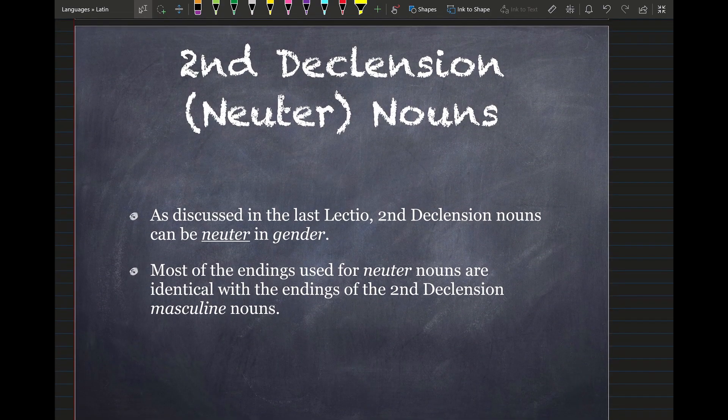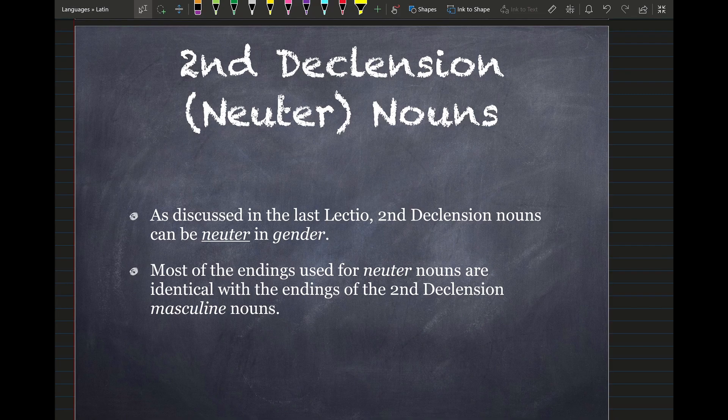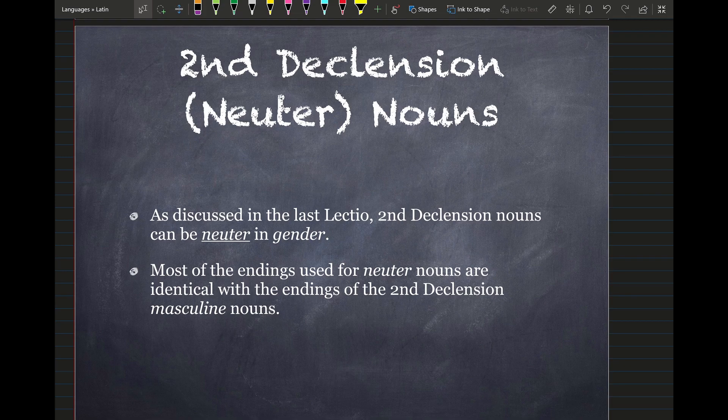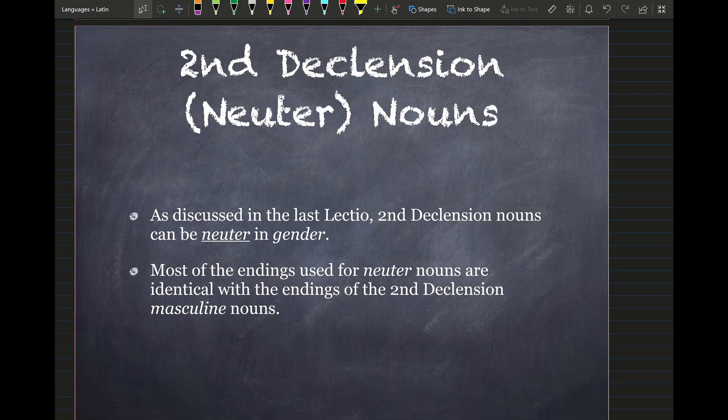All right. Also in this lecture, we're going to return to the second declension nouns, but we're going to be dealing with the neuter second declension nouns. They're similar to the second declension masculine nouns, but it's a little different. And we'll see that. So second declension masculine nouns can be neuter and gender. Most of the endings used for the neuters are identical, almost identical with the endings of the second declension masculine. So there's just a few cases that are different. We'll see those as we go.